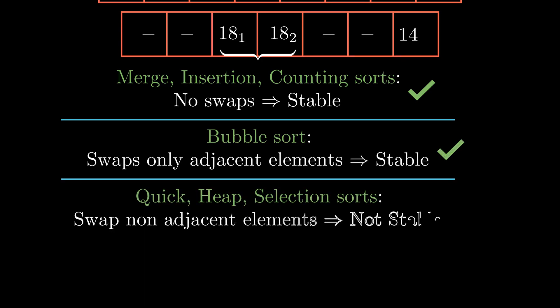Quick sort, heap sort and selection sort swap non-adjacent elements, so they are unstable. I have put a link to the code of all these algos in the description where you can check for the existence of swaps in various algos.